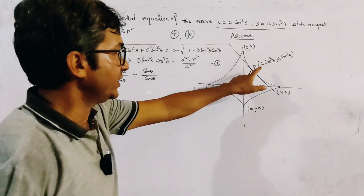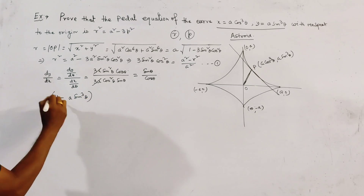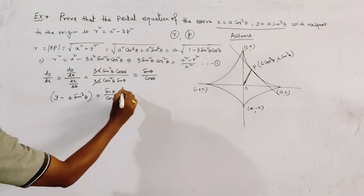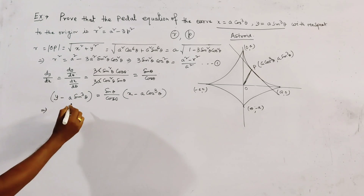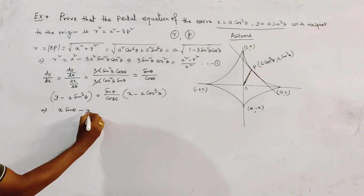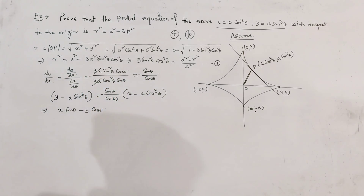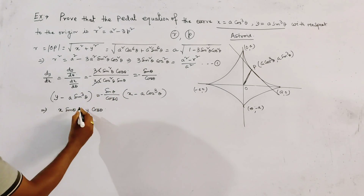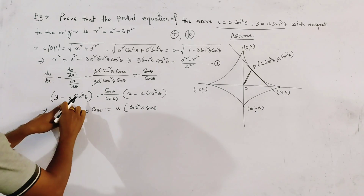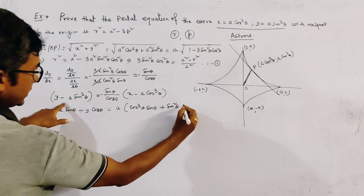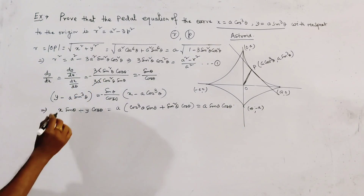The equation of the tangent at point P (a·cos³θ, a·sin³θ) to the asteroid is: y − a·sin³θ = (−sinθ/cosθ)·(x − a·cos³θ). Rearranging, we get x·sinθ + y·cosθ = a·sin³θ·cosθ + a·cos³θ·sinθ. Taking sinθ·cosθ common on the right side, this simplifies to x·sinθ + y·cosθ = a·sinθ·cosθ. This is the equation of the tangent.